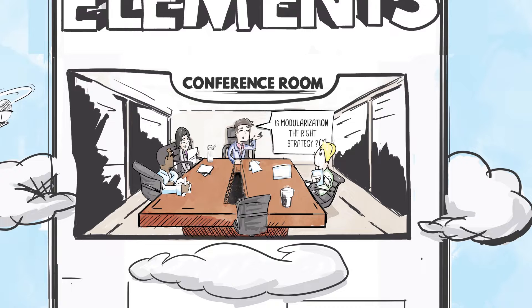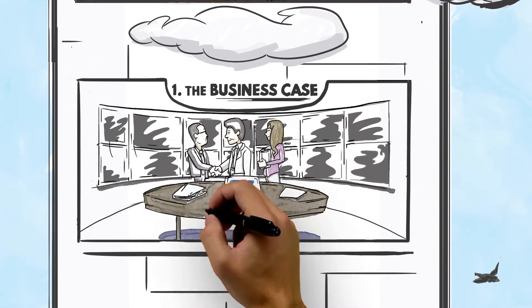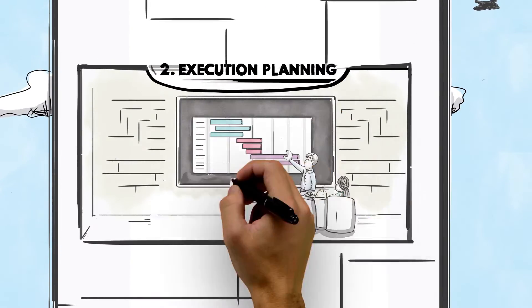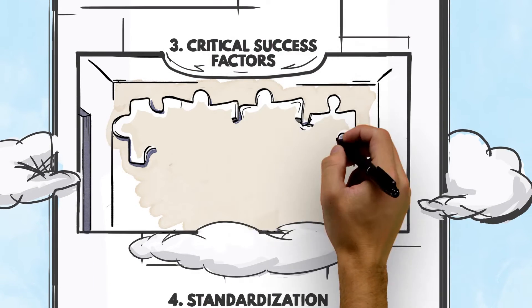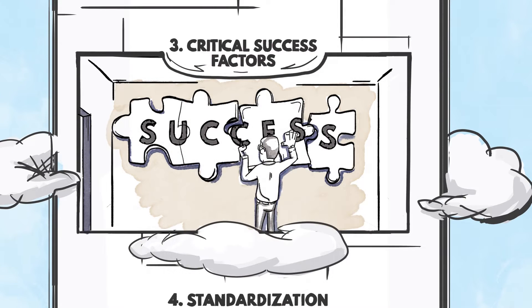The project level process is initiated with the business case, which dovetails with the execution planning. Attention to the critical success factors reinforces both of these efforts.